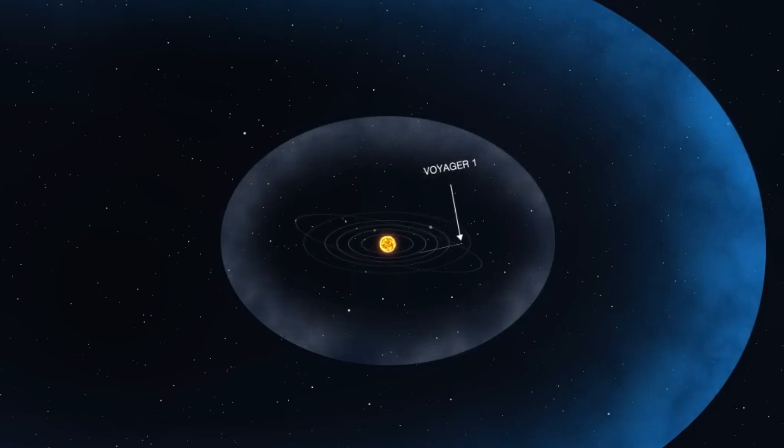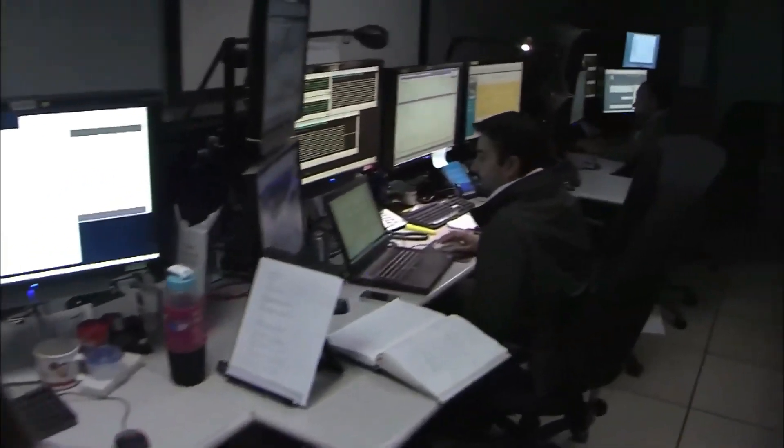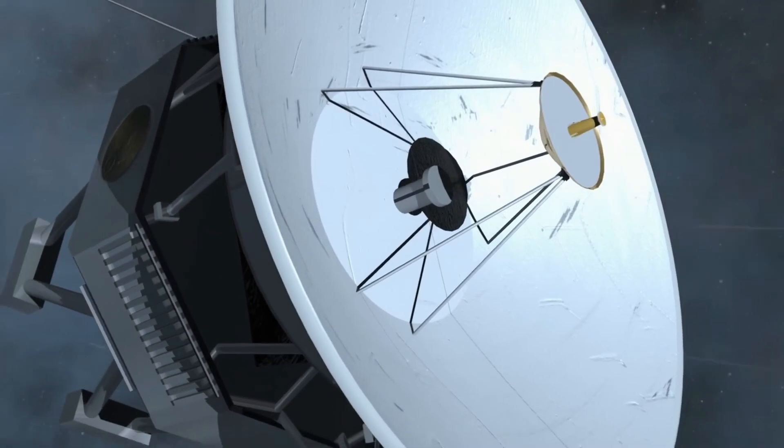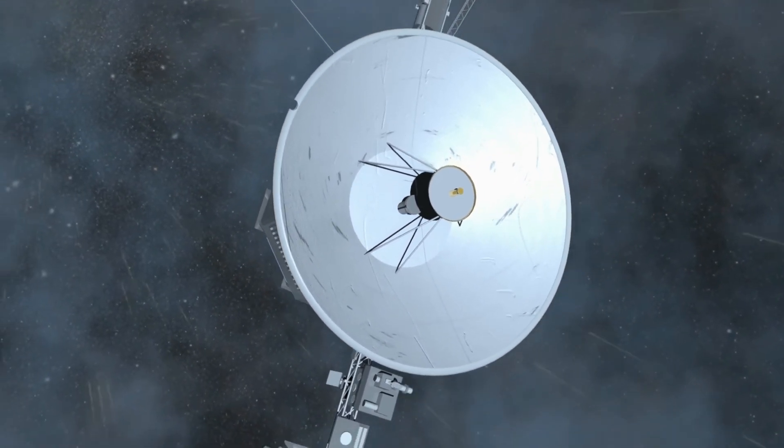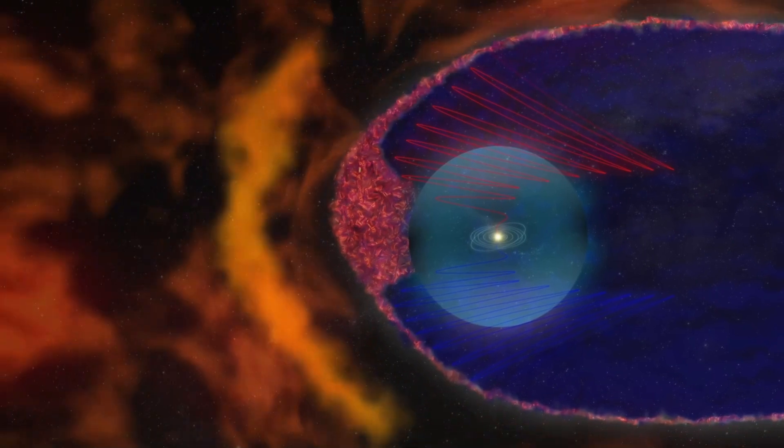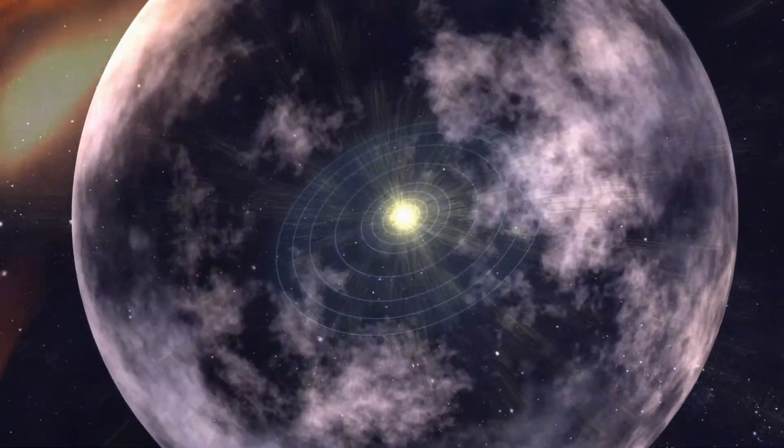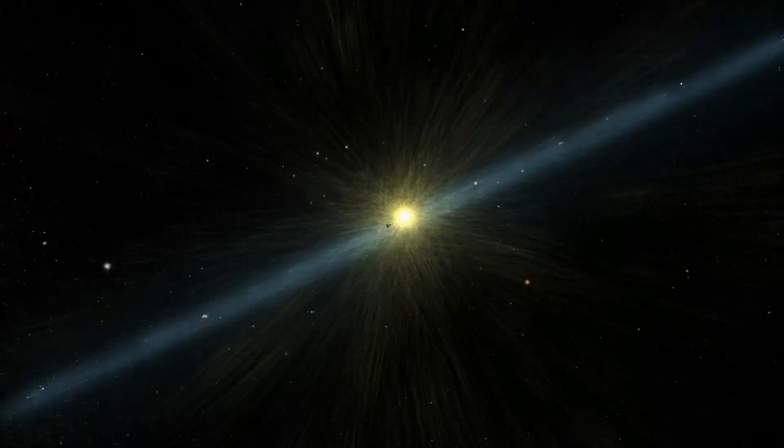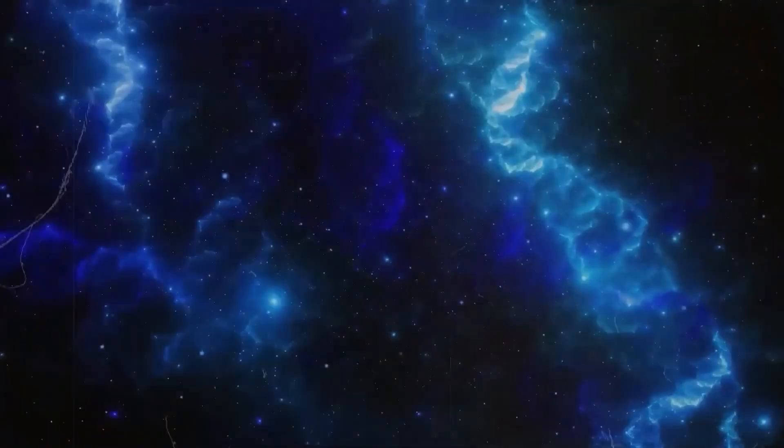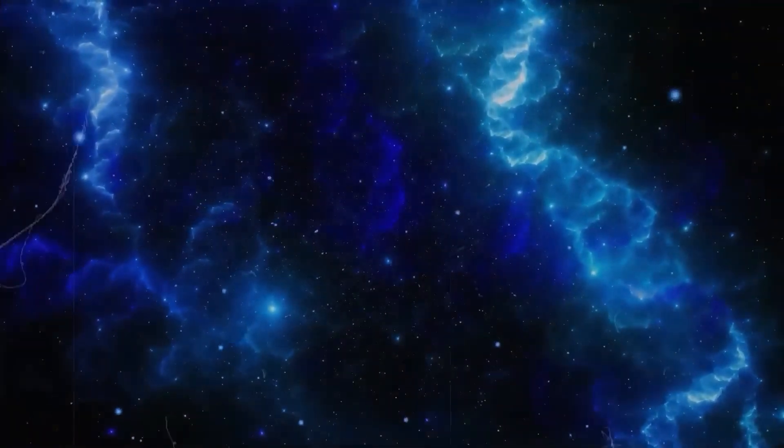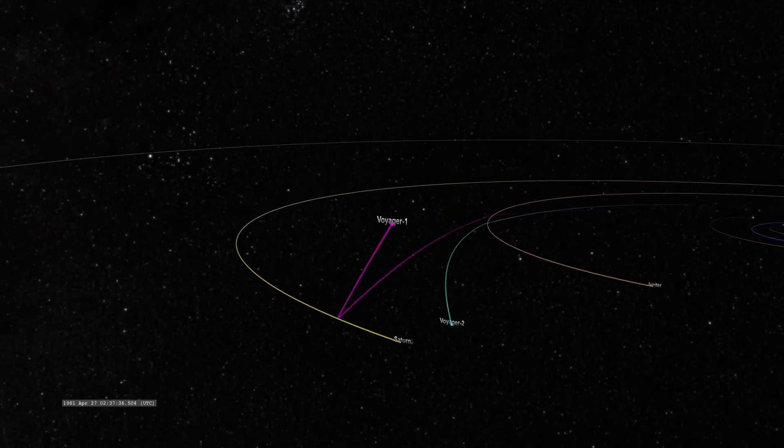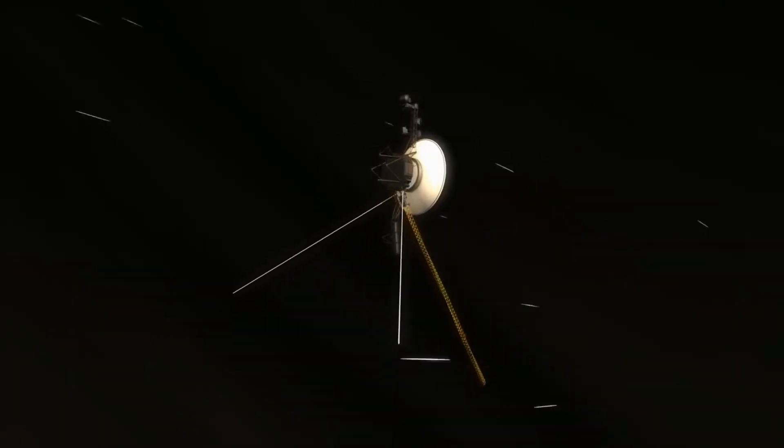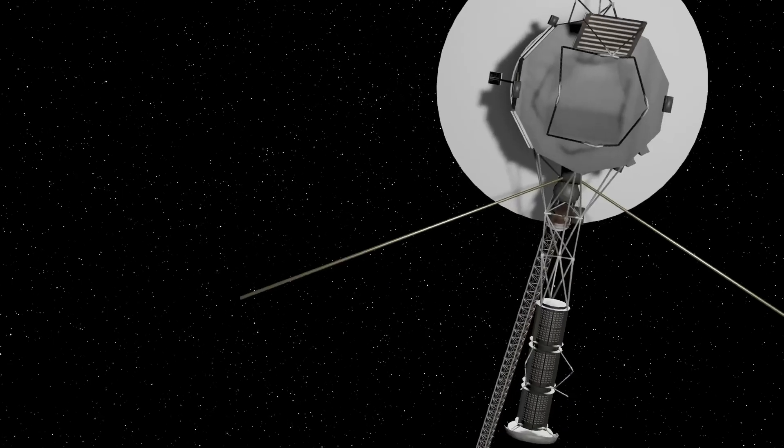But here's the twist. When Voyager 1 finally crossed into interstellar space, scientists expected a clear sign. For years, they had predicted that one of the most obvious markers of this crossing would be a sudden shift in the magnetic field, the change from the solar system's magnetic influence to that of the Milky Way. It was supposed to be a clean transition, a sharp boundary, a clear handshake from one magnetic realm to another. But that didn't happen. Voyager 1 found no such shift. The magnetic field direction barely changed at all. That discovery broke the models.